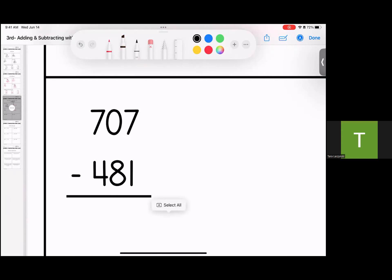Subtraction. Watch your signs. 7 minus 1 is 6, I have to borrow. 10 minus 8 is 2. 6 minus 4 is 2, but rounded to the nearest 10s is 230.